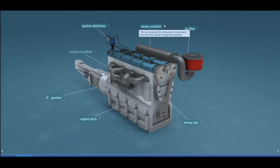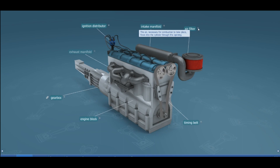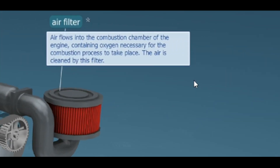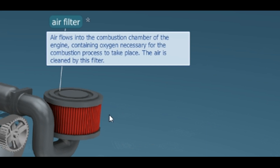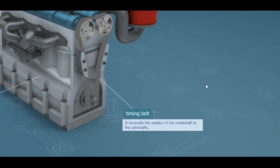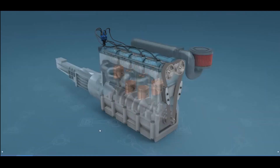The intake manifold is where the air necessary for combustion flows into the cylinder. The air filter allows air to flow into the combustion chamber — it contains the oxygen necessary for combustion. The air is cleaned by this filter; most of the time it will be inside its own air filter compartment. Finally, the timing belt transmits the rotation of the crankshaft to the camshafts.